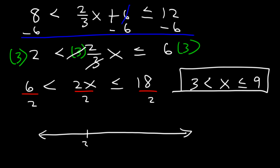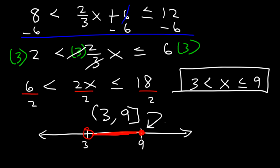On the number line, let 3 and 9 be our points. x is greater than 3 — it doesn't equal 3 — so we have an open circle shaded towards the right. x is less than or equal to 9, so it's a closed circle at 9 shaded towards the left. x is between 3 and 9. In interval notation, the answer is parenthesis 3 to 9 bracket, with a bracket at 9 since we have a closed circle there. That's it for this video, thanks for watching.